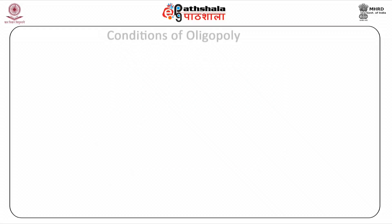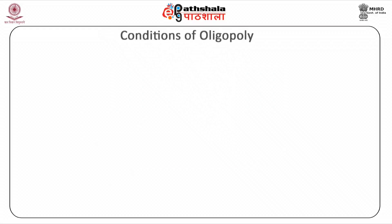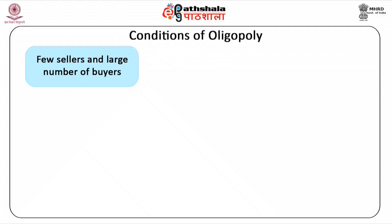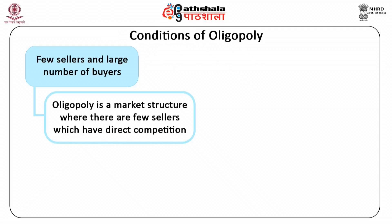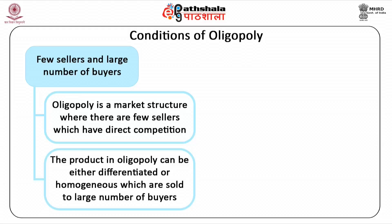Let us have a glance over the conditions of oligopoly. First, few sellers and large number of buyers. Oligopoly is a market structure where there are few sellers which have direct competition. The product in oligopoly can be either differentiated or homogeneous, which are sold to a large number of buyers.